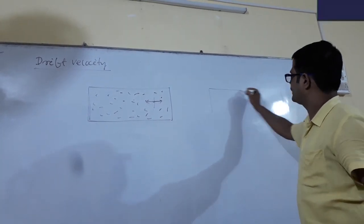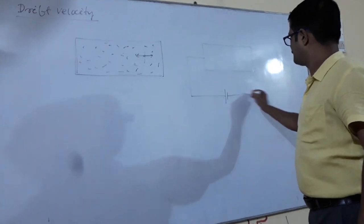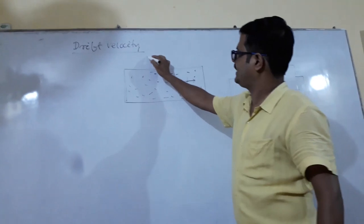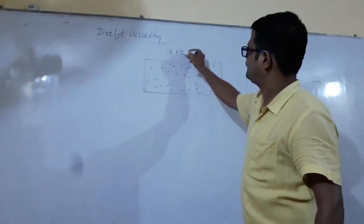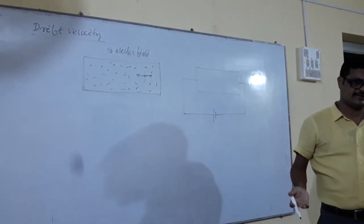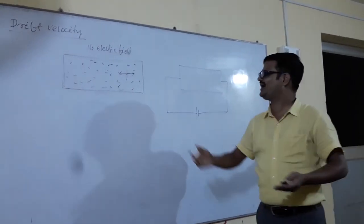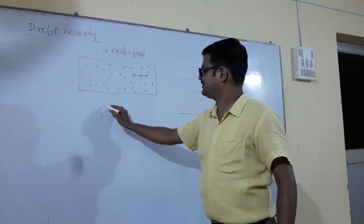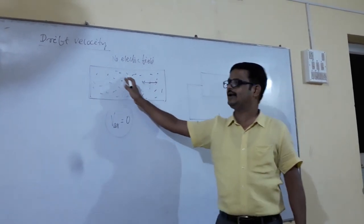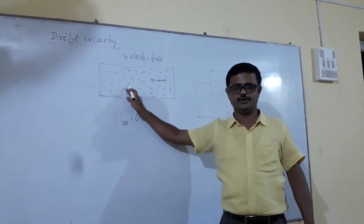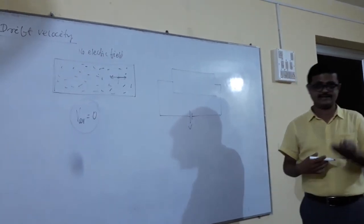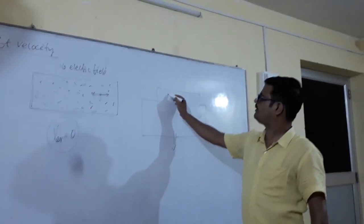But now see what will happen. First of all, when there is no electric field, there is no current. Current is zero. The average velocity of the electrons is zero because they are moving randomly. But in this case, when we are giving a potential difference, what will happen?